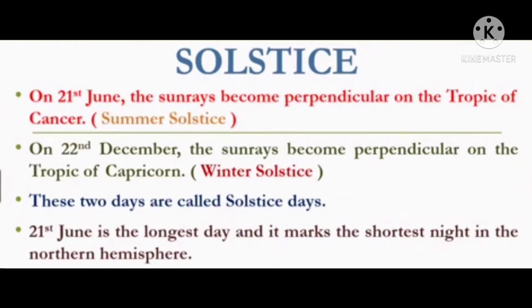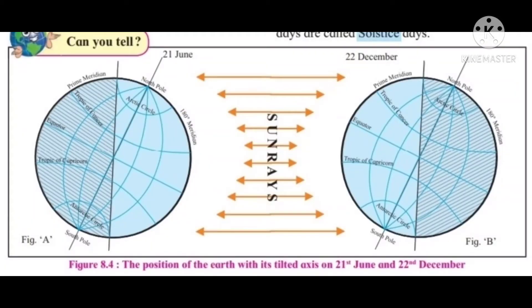Only on 21st June and 22nd December do the rays become perpendicular on the Tropic of Cancer and Tropic of Capricorn respectively. These two days are called solstice days. On 21st June, the sun's rays become perpendicular on the Tropic of Cancer — this is the Summer Solstice. On 22nd December, the sun's rays become perpendicular on the Tropic of Capricorn — this is the Winter Solstice. 21st June is the longest day and marks the shortest night in the northern hemisphere.